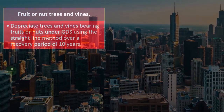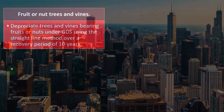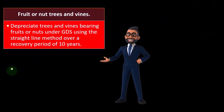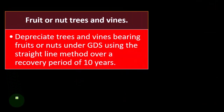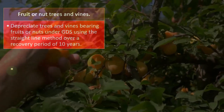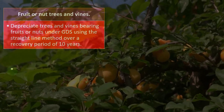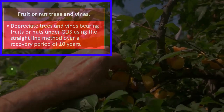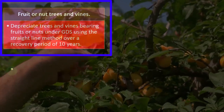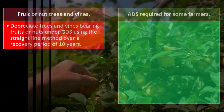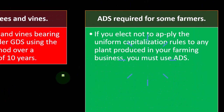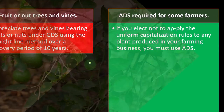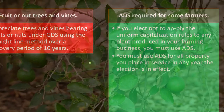So then we've got another somewhat unusual situation — more of a specialty area with fruits or nut trees and vines. Depreciate trees and vines bearing fruits or nuts under GDS using the straight-line method over a recovery period of 10 years. Then you've got ADS required for some farmers: if you elect not to apply the uniform capitalization rules to any plant produced in your farming business, you must use ADS.